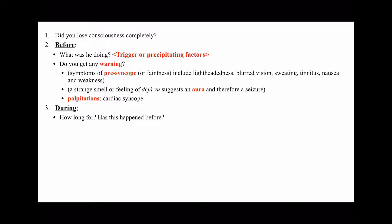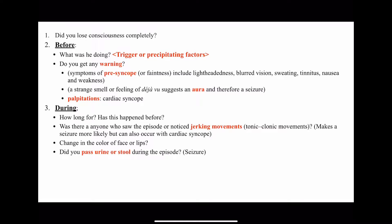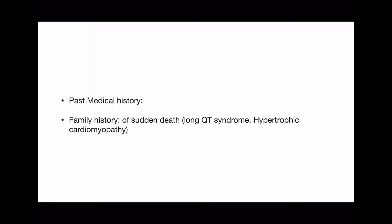During the event: ask how long the episode lasted and whether it has happened before, exploring previous episodes in detail. Ask if any witnesses noticed jerky movements, change in color of face or lips, urinary or bowel incontinence, or tongue biting. After the event: ask whether the patient woke up normal or had drowsiness, and whether they sustained any injuries. In past medical history, ask about previous heart disease, diabetes, or epilepsy. Family history should include sudden death or history of fainting.